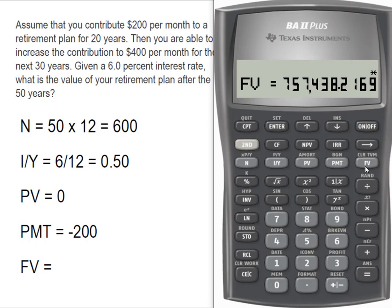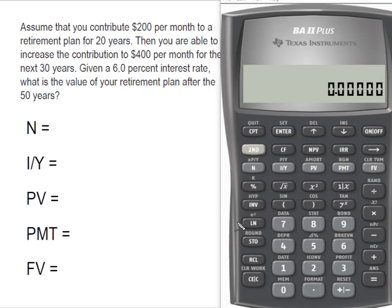Write that number down because we're going to come back to it. That took care of the $200 going the whole 50 years. Remember we increased our contribution to $400 per month, so that's an additional payment of $200 a month — entered as a negative — and we're going to be able to invest that extra $200 for 30 years.